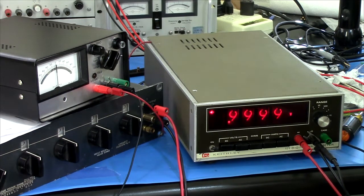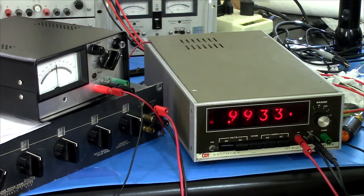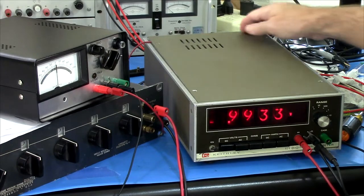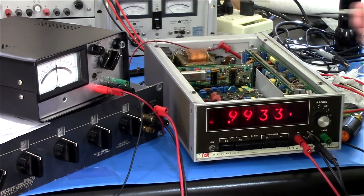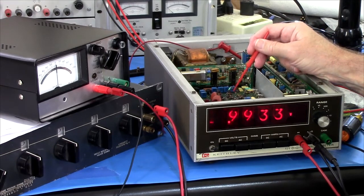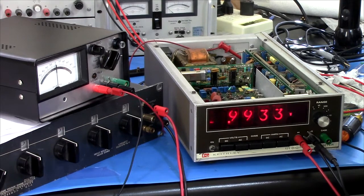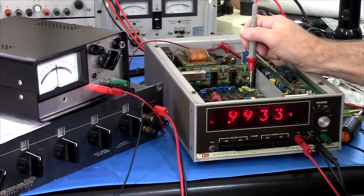But here's the problem. If I reverse the leads and give it negative one volt in, I get minus 9933, and I cannot get it closer than that. It won't. That's at the end of the calibration adjustment. I even lifted the leg of a resistor here to try and get more range on the adjustment. And no, it's fully at the limit. Even that didn't bring it into spec on the negative side.